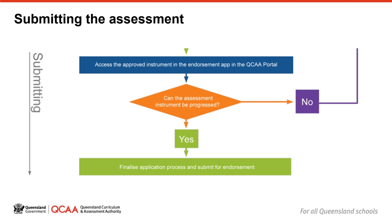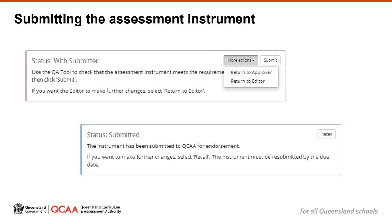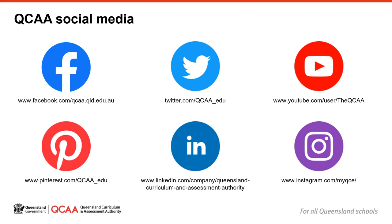Submitting the assessment instrument. If the submitter determines that further actions are required, they can return an assessment instrument to the approver or editor. A pop-up comment box will appear so that comments or questions can be written for the editor or approver to action. If the submitter is satisfied with the assessment instrument, they can submit it to the QCAA for endorsement. Once the assessment instrument has been submitted, until the due date a submitter can recall the assessment instrument if changes are required. Once recalled, the submitter can send the assessment instrument to the editor or approver to make the required changes. To resubmit the assessment instrument it must go back through the edit, approve, submit workflow. The QCAA also uses social media to share information about upcoming events, activities and resources.